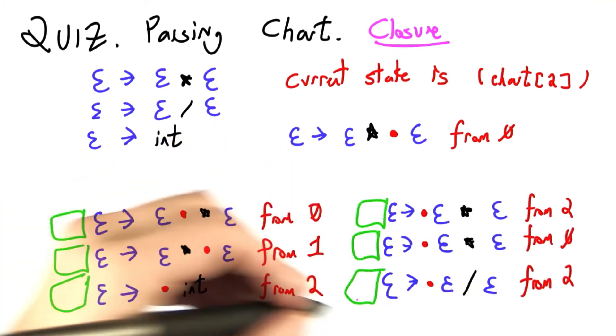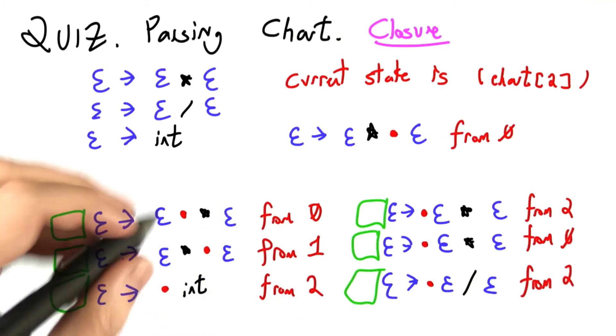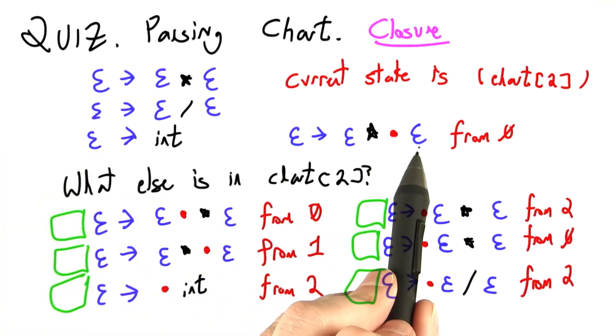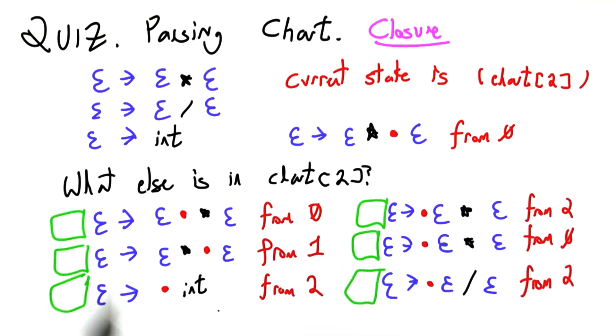And what I'd like you to do is indicate which of these other states would have to be included in chart 2. That is, let's say we bring in the closure from this parse state. What else are we going to bring in?